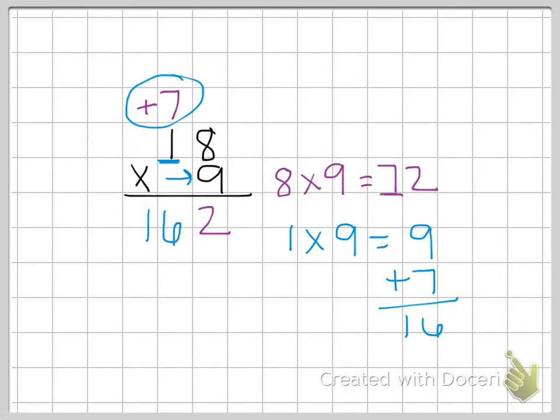If you wanted to do it using the other strategy, which we call partial products, you could say, 18 is the same thing as 10 plus 8. We're going to multiply both of those by 9. 10 times 9 is 90, and 8 times 9 is 72. Then we add them together to get 162.